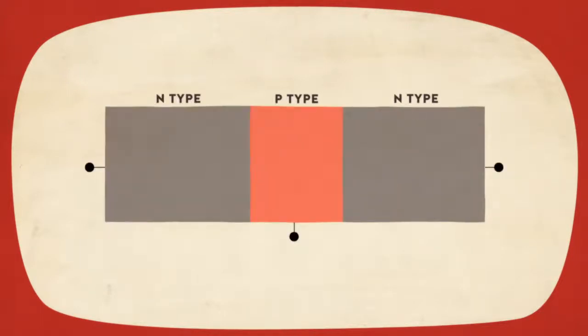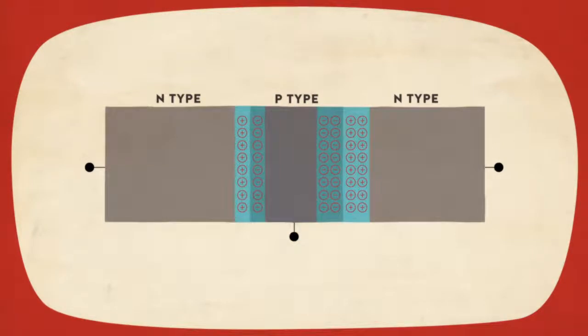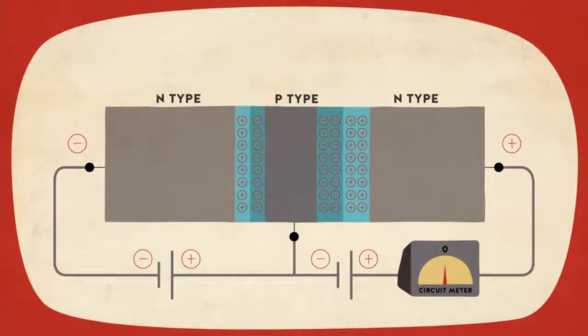The emitter, the base, and the collector. In this typical NPN transistor, due to certain phenomena at the P-N interface, a special region called a P-N junction forms between the emitter and base. It only conducts electricity when a voltage exceeding a certain threshold is applied.